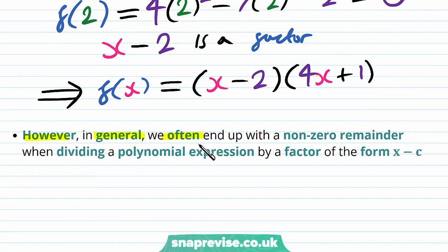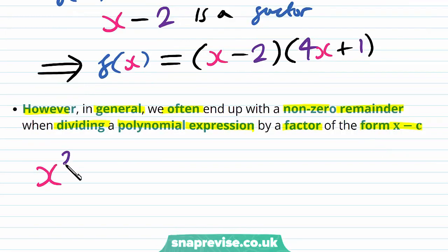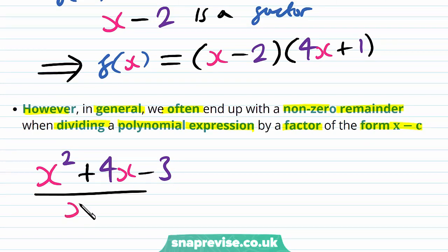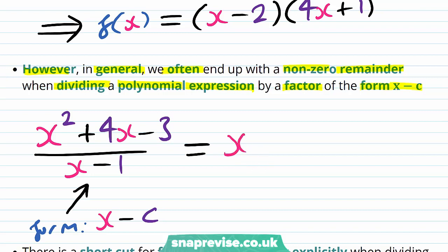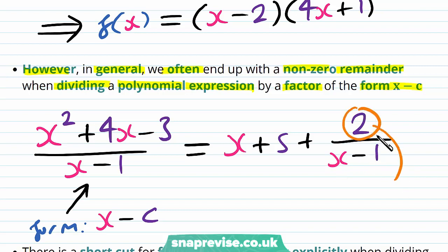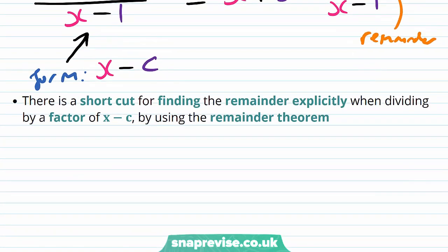However, in general we often end up with a non-zero remainder when dividing a polynomial expression by a factor of the form x - c. Consider now dividing x² + 4x - 3 by x - 1. When we do this we get the result x + 5 plus 2/(x - 1). This quantity 2 is our remainder from the division. There is a shortcut for finding the remainder explicitly when dividing by a factor x - c by using the remainder theorem.